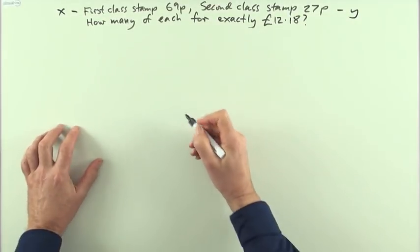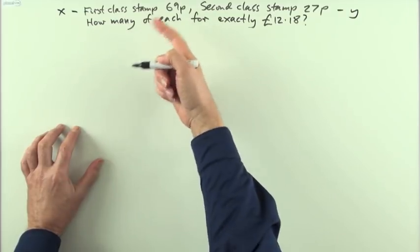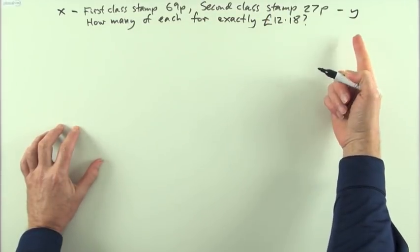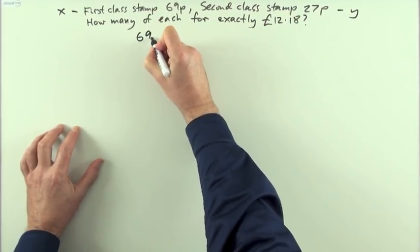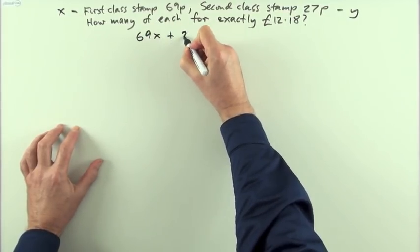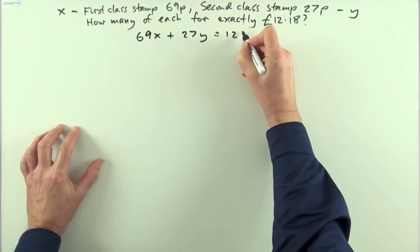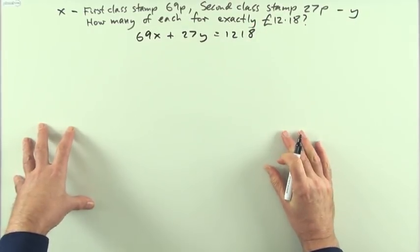Then you can form an equation. You've bought a certain number of first class stamps, a certain number of second class stamps and it came to exactly £12.18. Well that must mean that 69x and 27y would be, putting that into pence as well, 1,218.